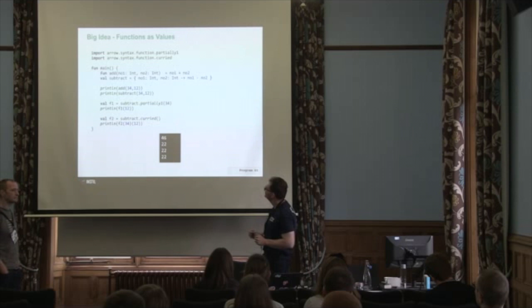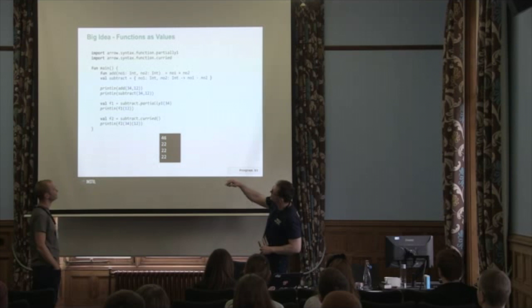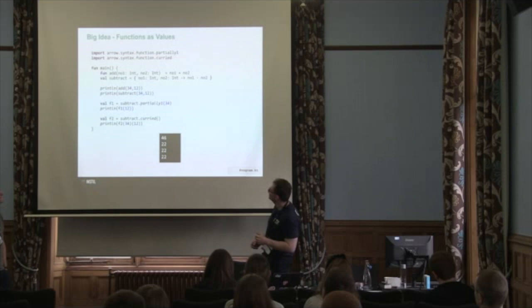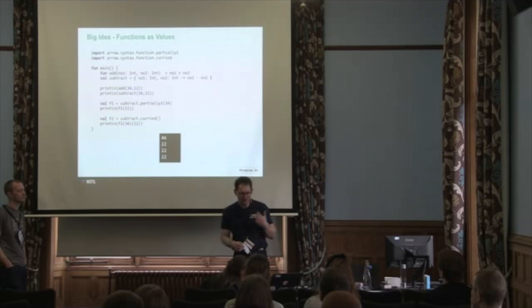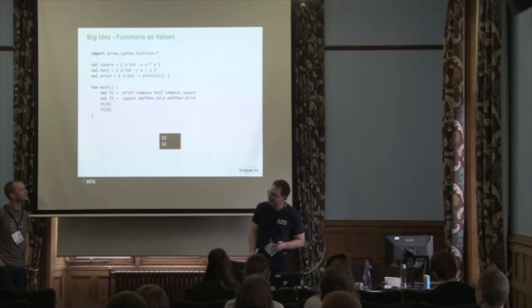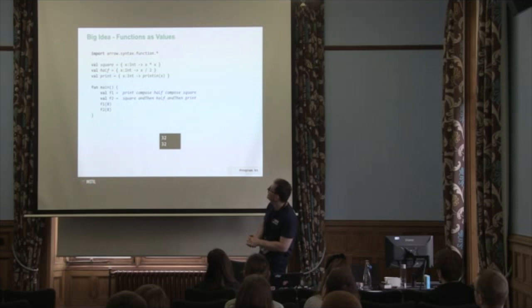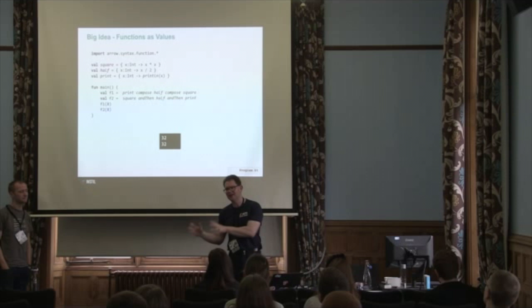The advantage of having functions as values is that if you're using a framework like Arrow, you can do things like partial invocation. Subtract takes two things, but we can partially invoke it and get back a function that has 34 hardwired, and then we only need to pass one other thing in. Or we can go the whole way and curry it — take a function that takes four inputs and turn that into a chain of functions where we pass in one input and get back another function, and so on. Or we could compose functions together. We've got square, half, and print — we could say square and then half and then print, and that would be all good. Whenever you have functions as values, you can start doing marvelous things.